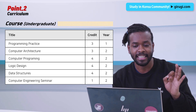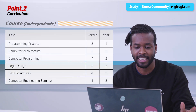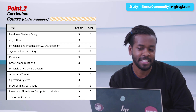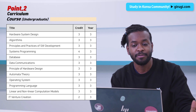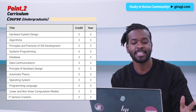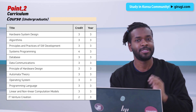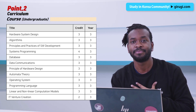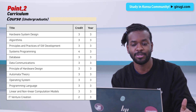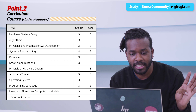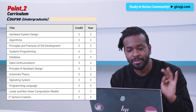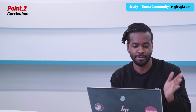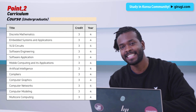In the third year, subjects include hardware, system design, algorithms, and databases. From the third year you actually start to learn deeply about computers. Usually, a lot of students decide at this point whether to go into information security, algorithms, or operating systems.